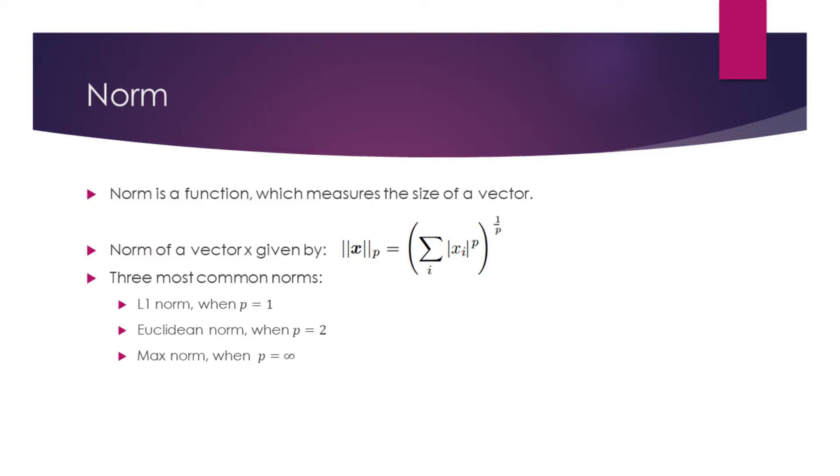There are three most commonly used values for p in this function. When p is equal to 1, the function is called L1 norm. For p equal to 2, it's called the Euclidean norm. Max norm is when p is infinity. Let's now consider each of them in more detail.